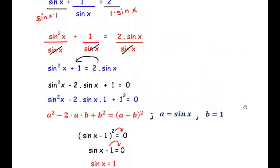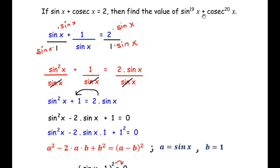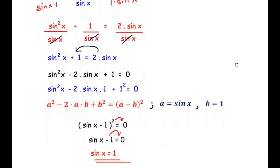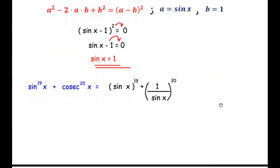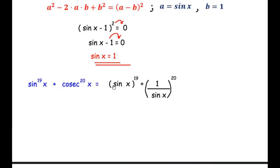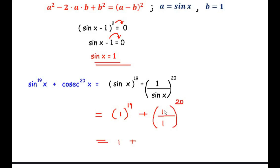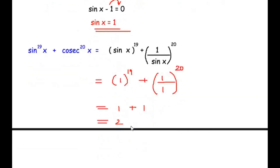Now let us come back to the main question: find the value of sin¹⁹x + cosec²⁰x. This can be written as (sin x)¹⁹ + (1/sin x)²⁰. Since sin x = 1, we substitute: 1¹⁹ + (1/1)²⁰ = 1 + 1 = 2. So the value of sin¹⁹x + cosec²⁰x is 2.